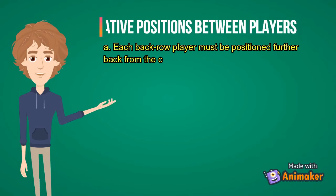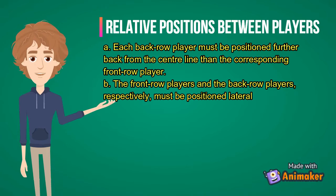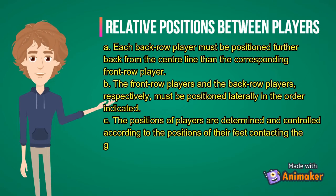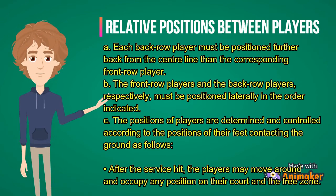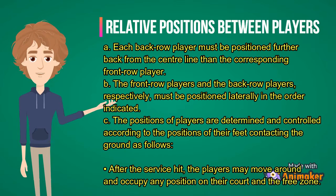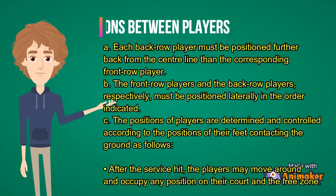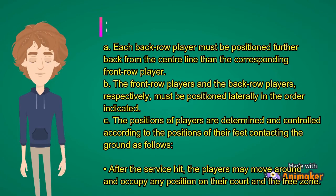Relative positions between players. Each back row player must be positioned further back from the center line than the corresponding front row players. The front row players and the back row players respectively must be positioned laterally in the order indicated. The positions of players are determined and controlled according to the positions of their feet contacting the ground. After the service hit, players may move around and occupy any position on their court and the free zone.